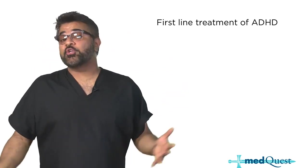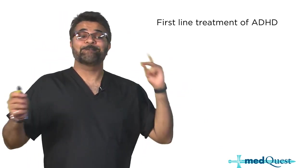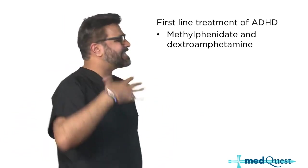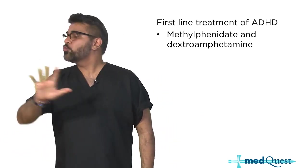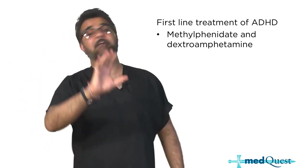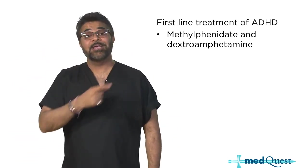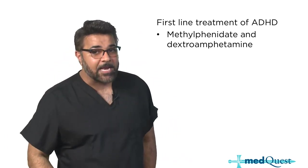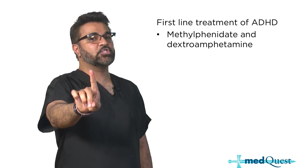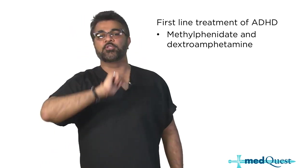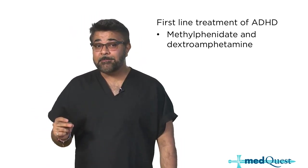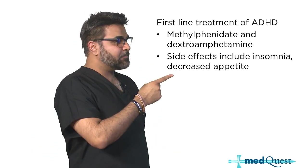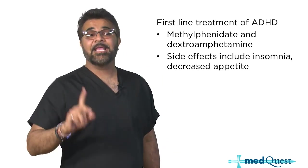The first-line treatment for ADHD - the medications are methylphenidate or dextroamphetamine. But what are the side effects they're going to ask you about? Because everybody knows it's methylphenidate and dextroamphetamine. The side effects are what change you from a 220 to a 240 on the exam. Since you're giving a stimulant, they're going to have appetite suppression, decreased appetite, and insomnia.